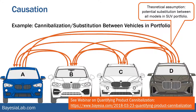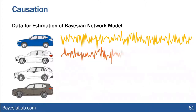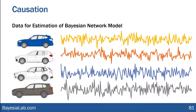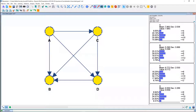Perhaps a buyer who ends up buying model D would have purchased model C had D not been available. Our theory is that all products in this portfolio of SUVs potentially steal from each other — that's why we see all these arcs drawn between the vehicles. Our domain knowledge tells us these dynamics occur when people shop for cars. In this particular case, we took daily sales data from the entire country across several years to estimate a network, built between expert knowledge and the sales data.